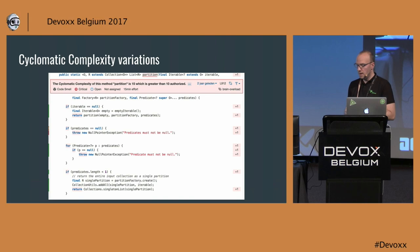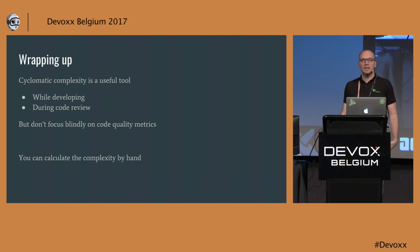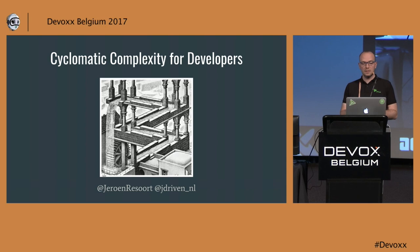Wrapping up: cyclomatic complexity can be a useful tool whether you're developing yourself or reviewing someone else's code. But don't focus blindly on these metrics — sometimes complexity just is, and you have to accept it. You can use it to find hot spots in your code that might need attention. Now you know how to calculate complexity by hand. Be careful collecting those metrics, and if you have any questions come over and discuss. Thank you for your time!